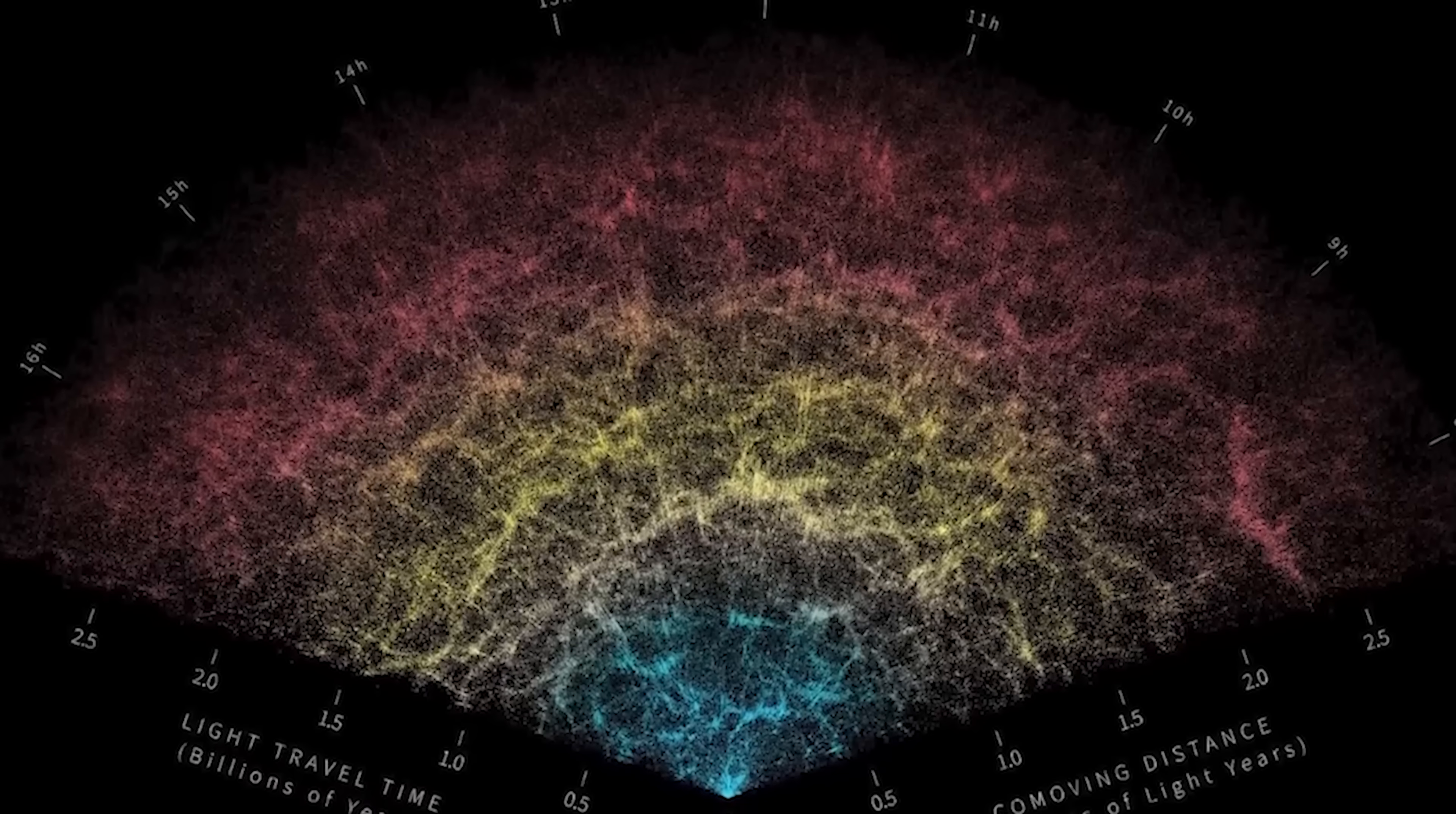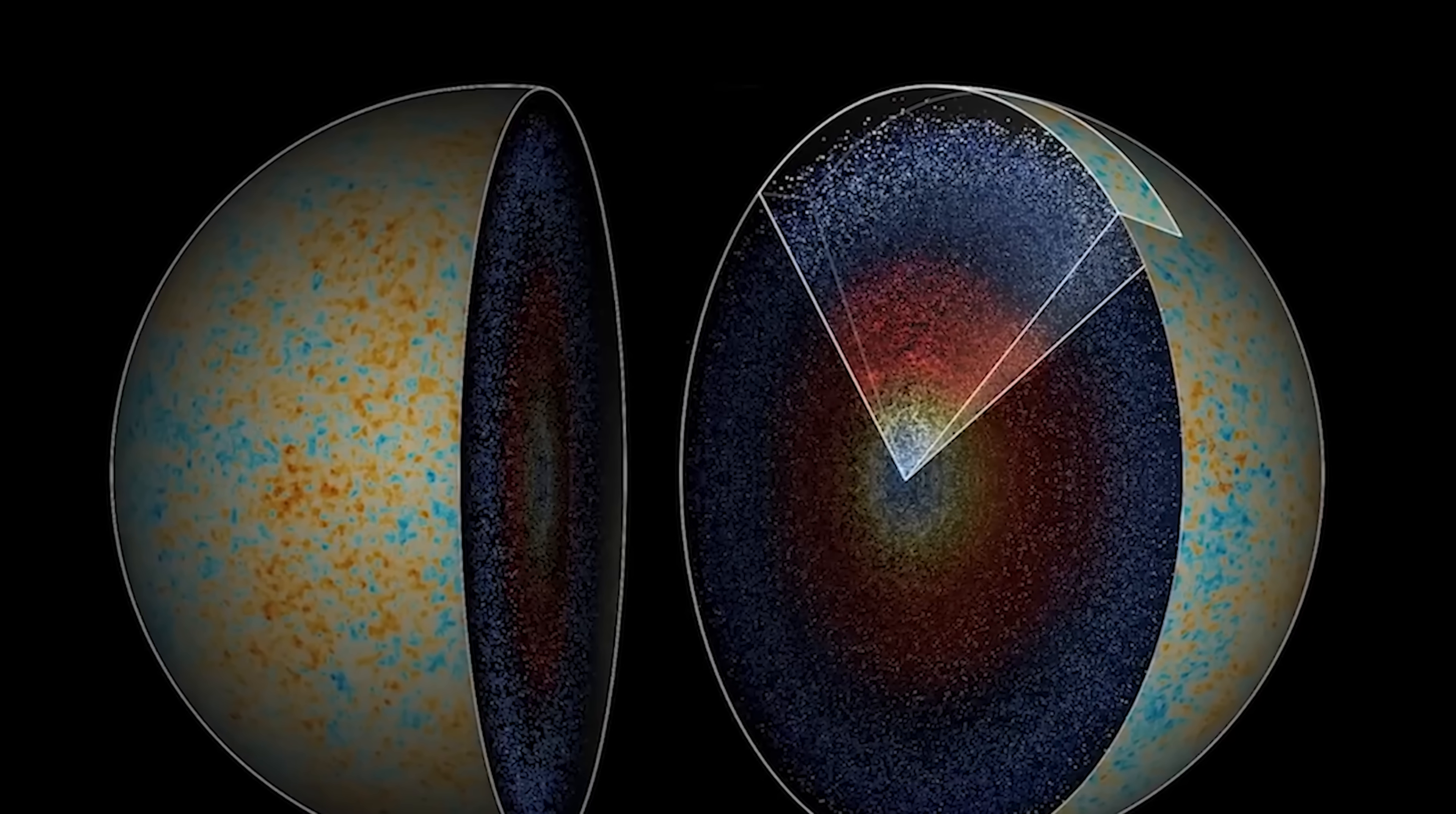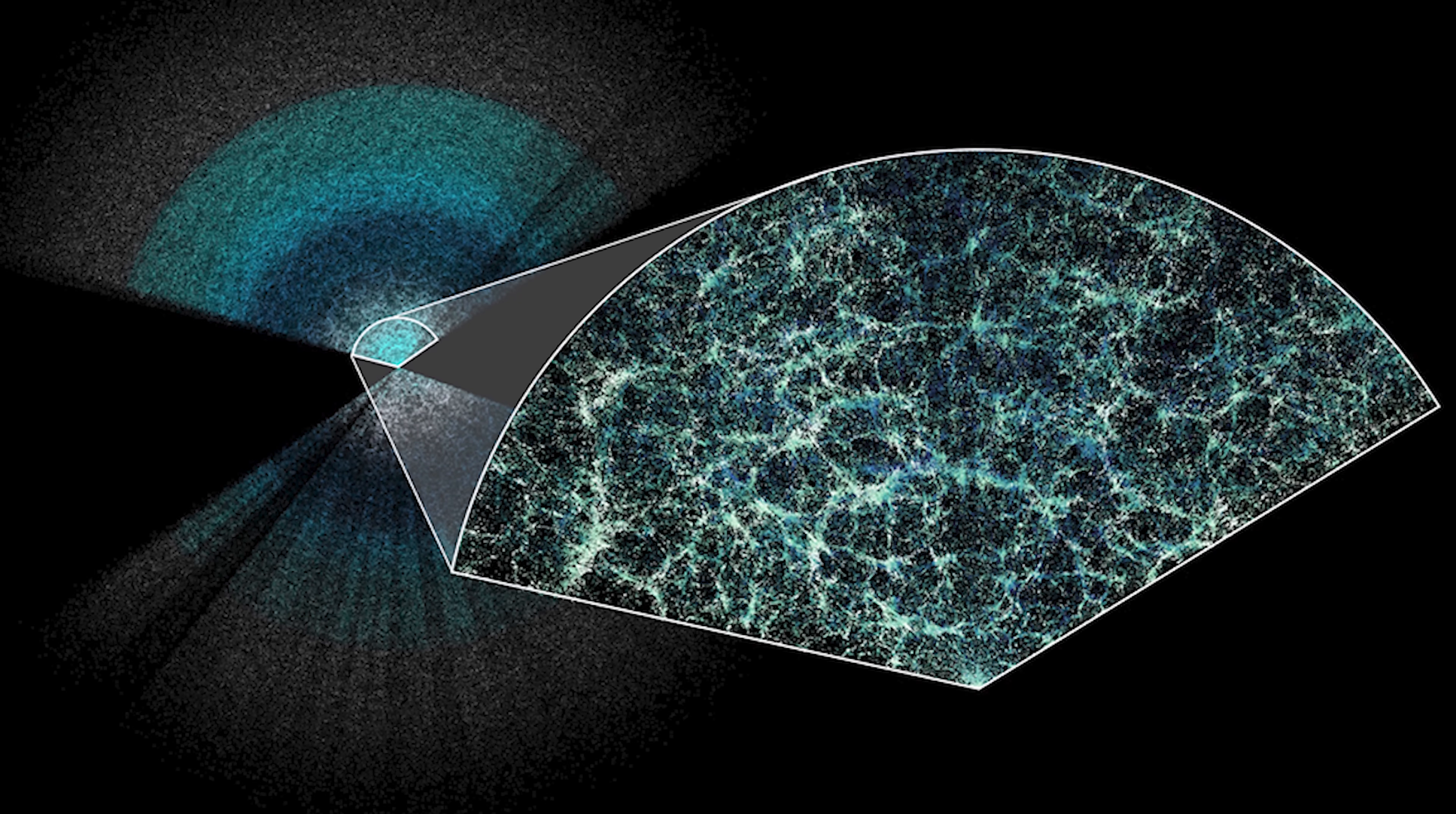Last year, astronomers added fuel to the fire with results from DESI, the Dark Energy Spectroscopic Instrument, a cutting-edge project in Arizona designed to map the structure of the cosmos with unprecedented precision. By charting over 15 million galaxies and quasars, DESI produced the largest 3D map of the universe ever made, double the size of anything before it.